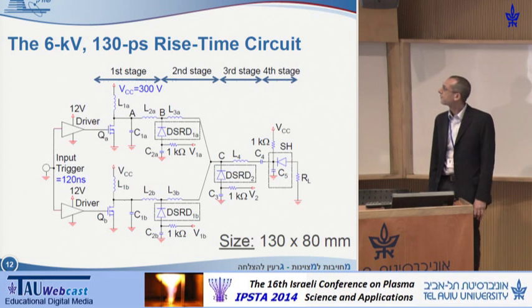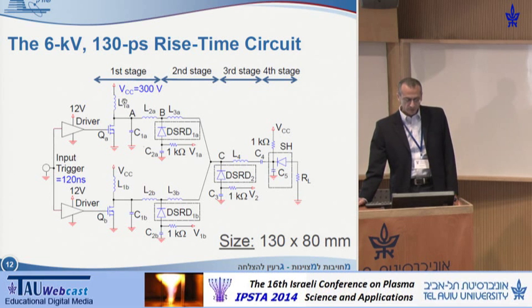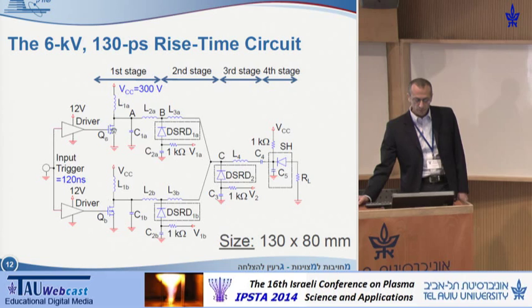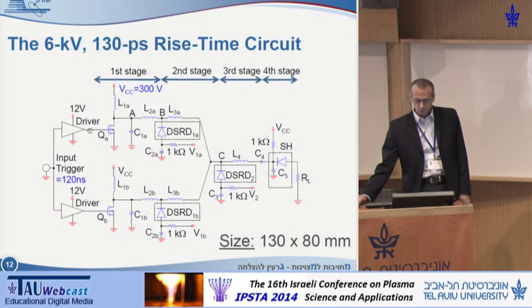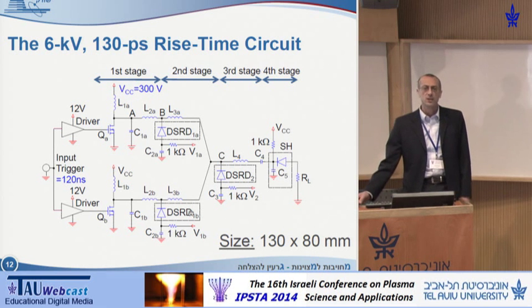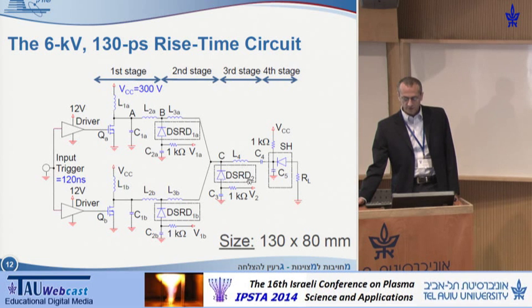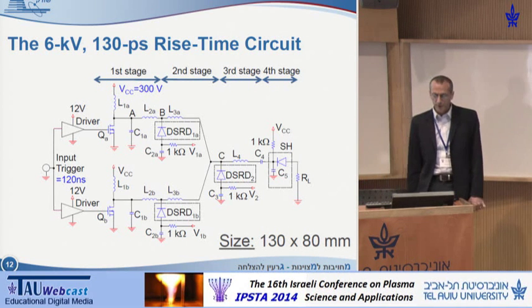This is the circuit we used. It has four compression stages. The first stage is two power MOSFETs. In the second stage there are two DSRDs, where the first and second stages have two parallel identical sections. The third stage is also a DSRD. The last stage is the silicon avalanche shaper diode.